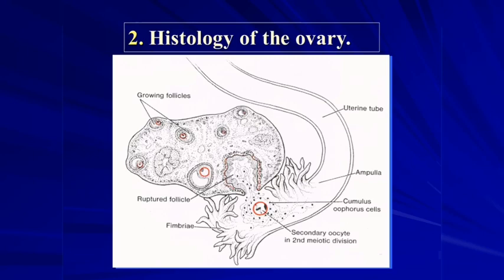After the mature Graafian follicle, we have ovulation and the oocyte release. The ruptured follicle becomes the corpus luteum, which secretes progesterone hormone. Progesterone helps prepare the endometrium. All changes in the menstrual cycle are related to the endometrium and not to the myometrium or the perimetrium.